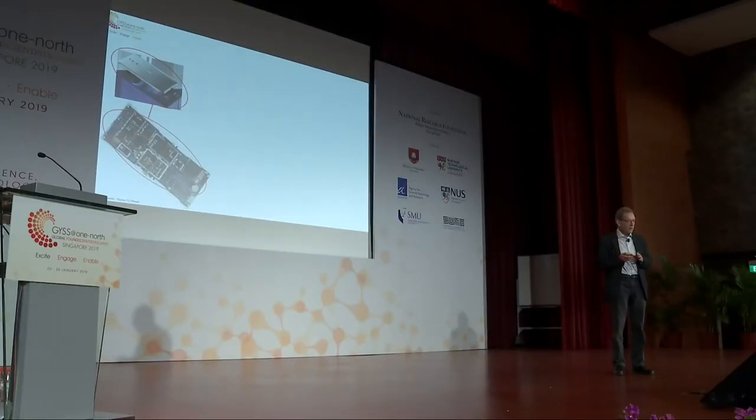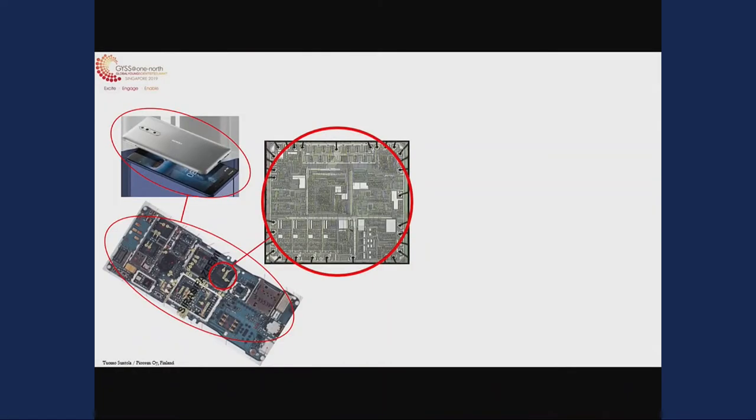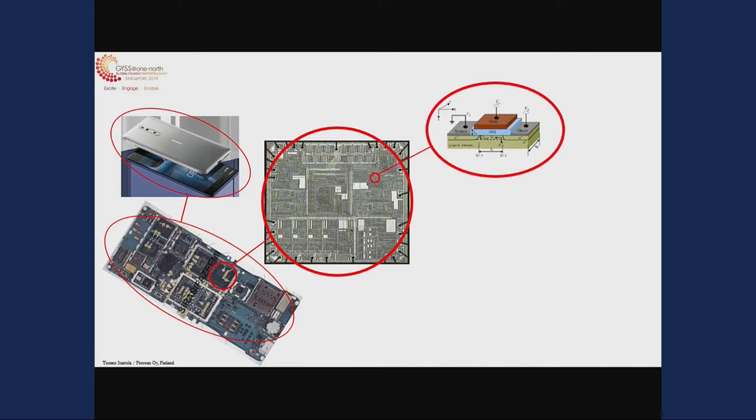Let's start from the transistors. All of you carry a smartphone in your pocket. We start by opening the cover, and we can see the printed circuit board. In the printed circuit board, we have the microprocessor, which has the size of your thumbnail, roughly, which has a large number of transistors.